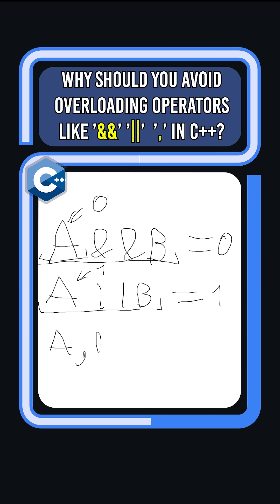And in comma operator, we evaluate first A, and then the right operand B, and the result will be B.